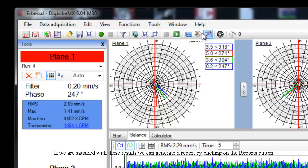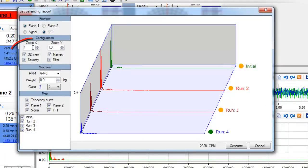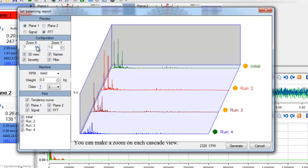If we are satisfied with these results, we can generate a report by clicking on the Reports button. You can make a zoom on each cascade view.